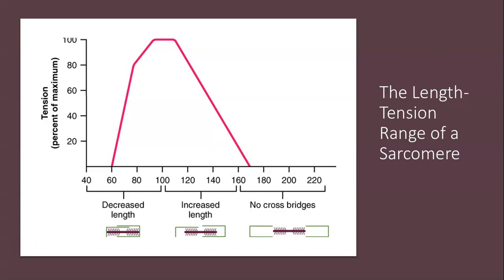What we see on this graph is that the ideal length of a sarcomere to produce maximal tension occurs around the 80 percent to 120 percent mark.